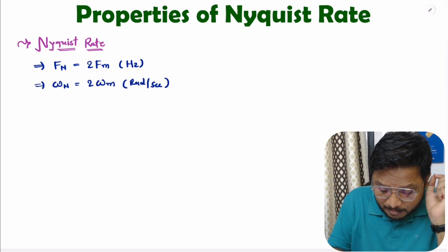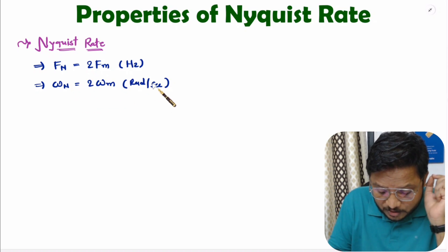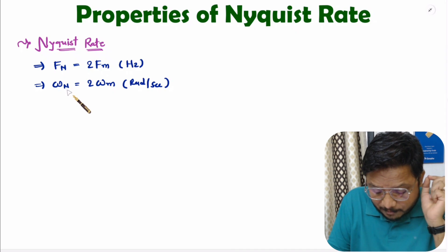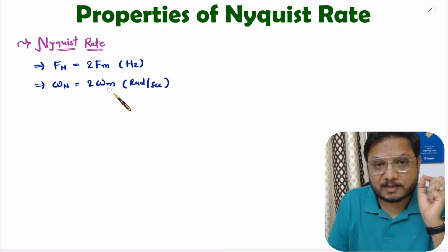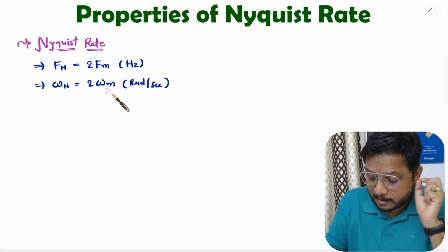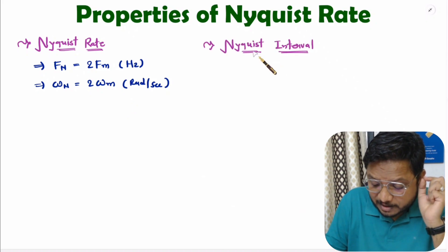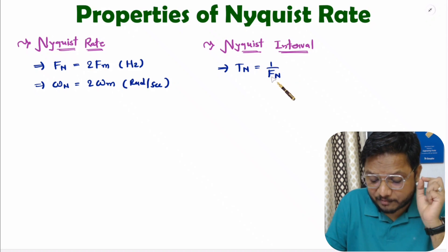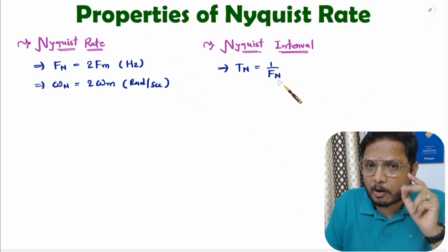Sometimes frequency can be expressed in radians per second. The Nyquist rate is the sampling frequency that is twice the maximum frequency of the original signal. Based on Nyquist rate, one can also understand the Nyquist interval, which is 1 divided by fm. Now I'll explain the properties of Nyquist rate.